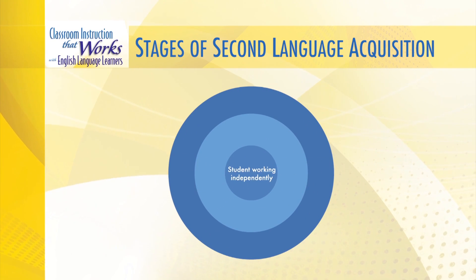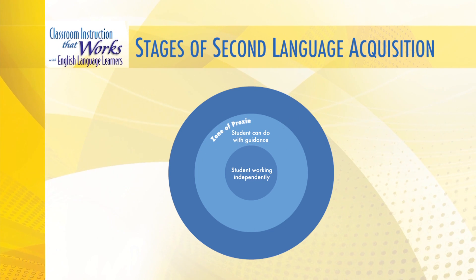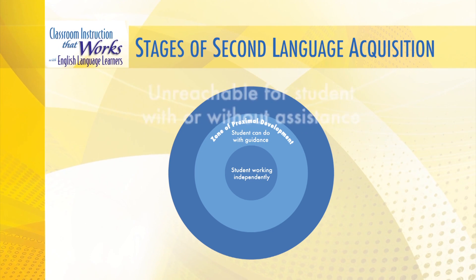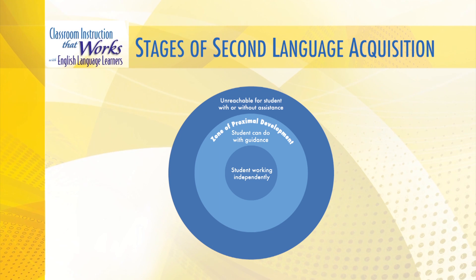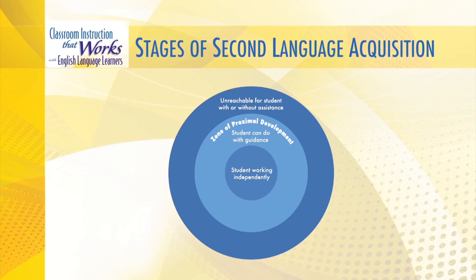Think about that with stages of second language acquisition. It's important for us to know the stage of our English language learner and their stage of English language acquisition, so we can help lift them up to the next stage, because there are five of those stages, and we do not want our English language learners stuck at any of those stages of second language acquisition.